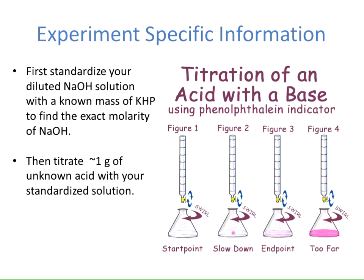We are then going to titrate about a gram of the unknown acid with the standardized sodium hydroxide solution. Using the molarity of the sodium hydroxide and knowing whether the unknown is a monoprotic, diprotic, or triprotic acid, you can figure out the number of moles of acid in your solution.